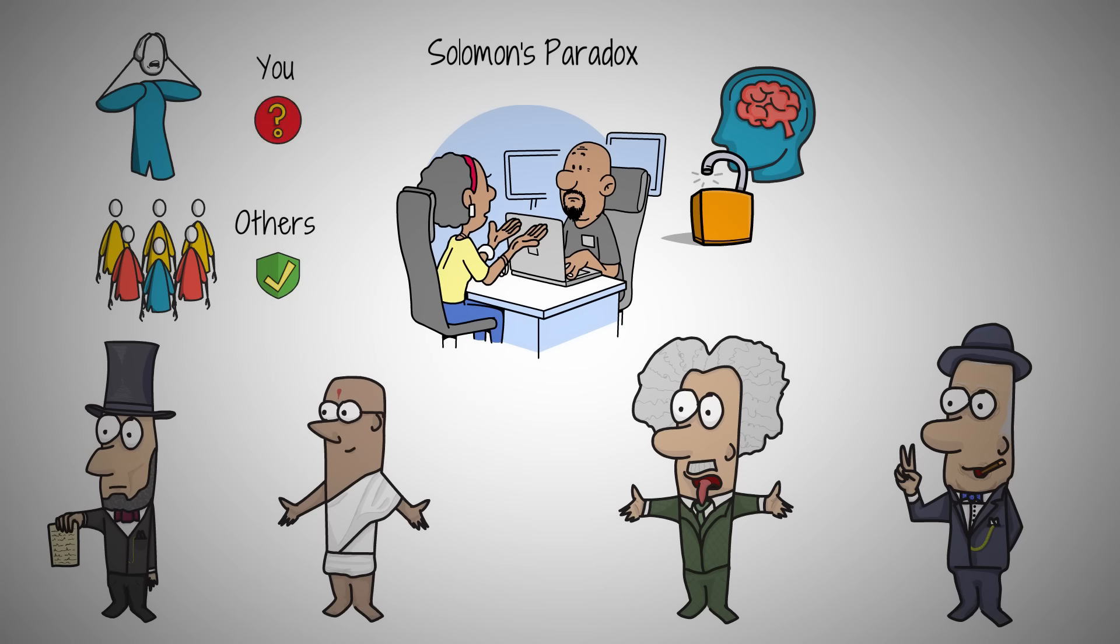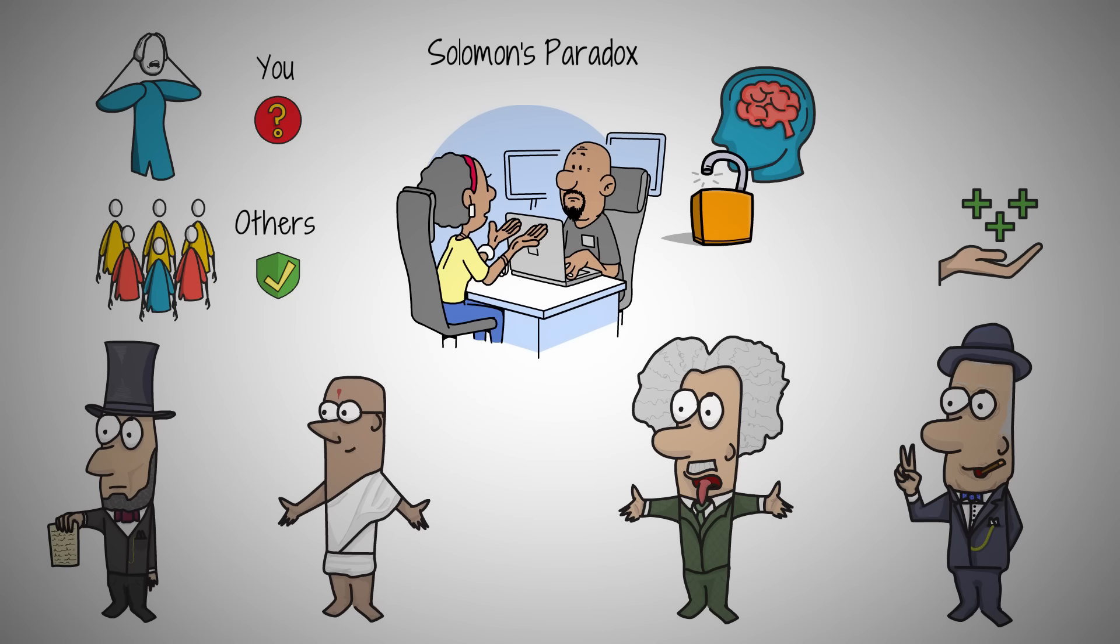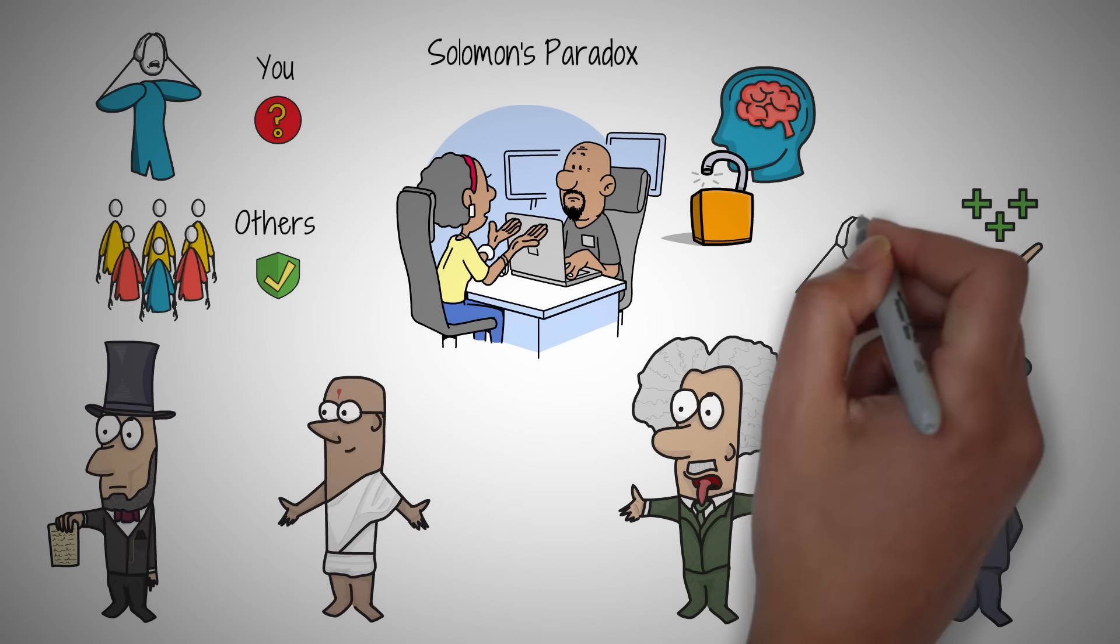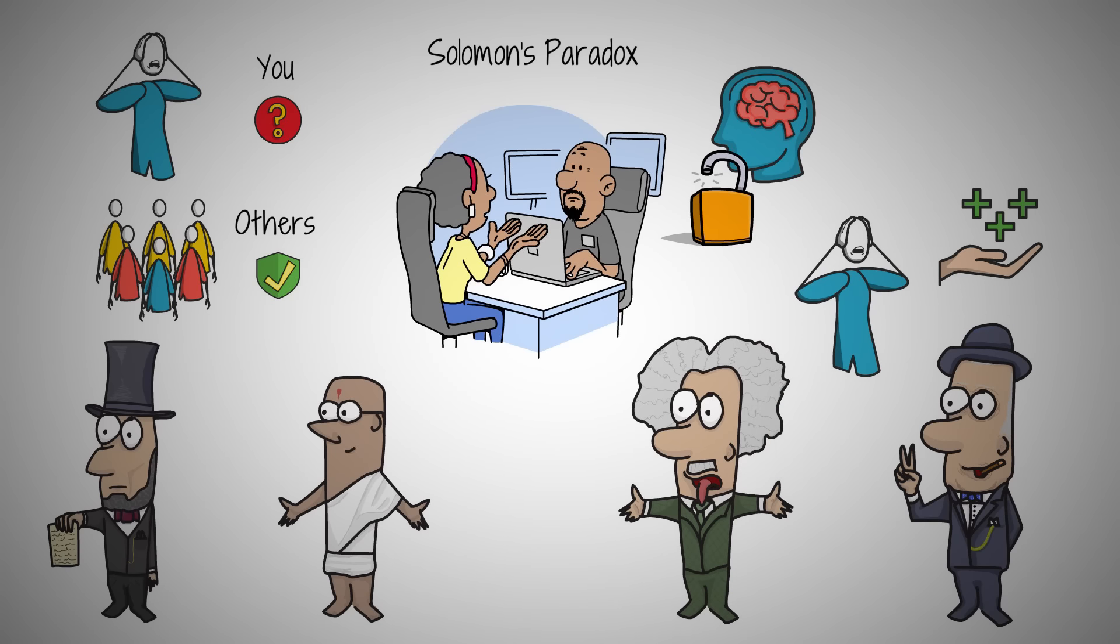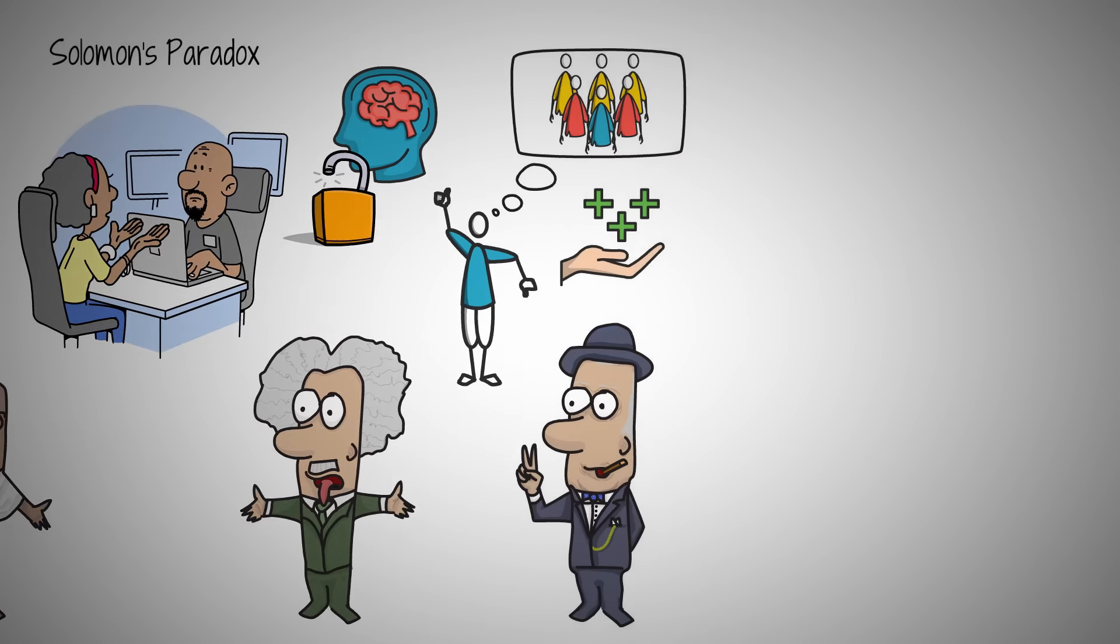This occurs because we think more clearly when we are not involved in the problem. We can use Solomon's paradox to our advantage and help us improve our lives by teaching us to think about our own problems like we are giving advice to a friend. This means trying to see our problems from outside, like a person who is not involved. This way, we can make better decisions for ourselves, just like we do for others.